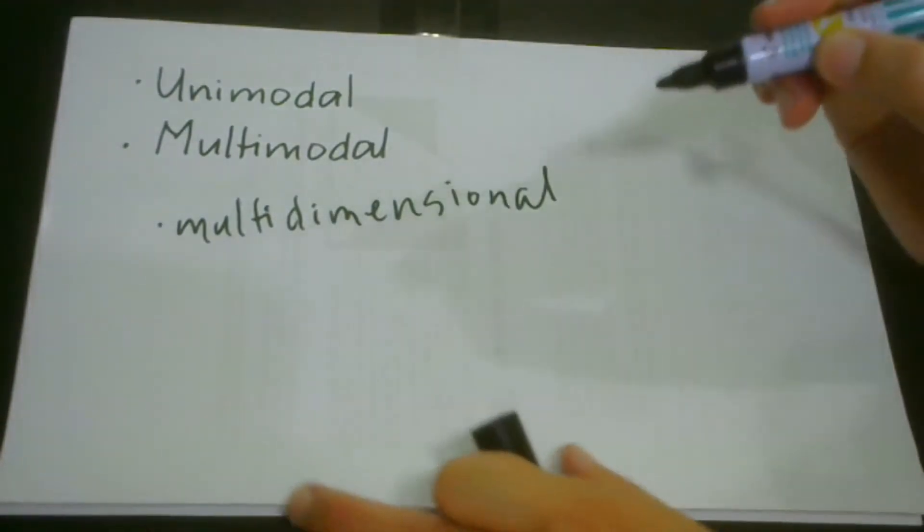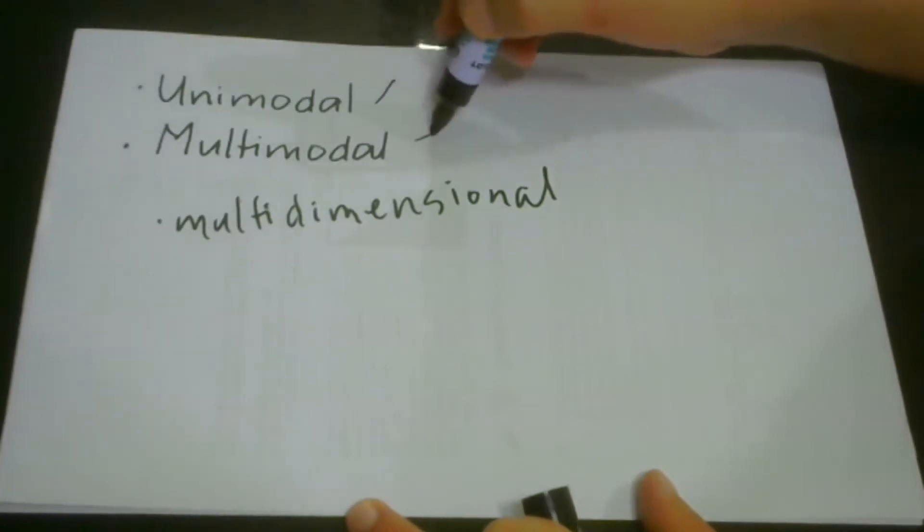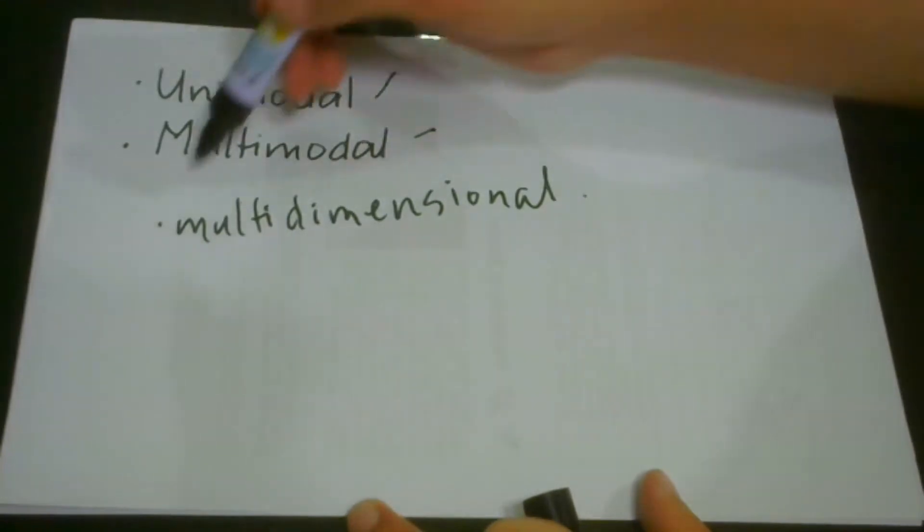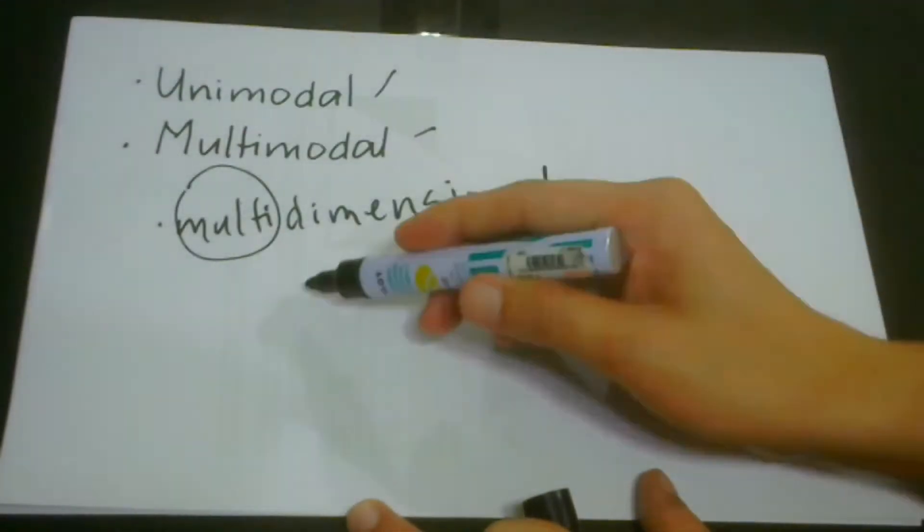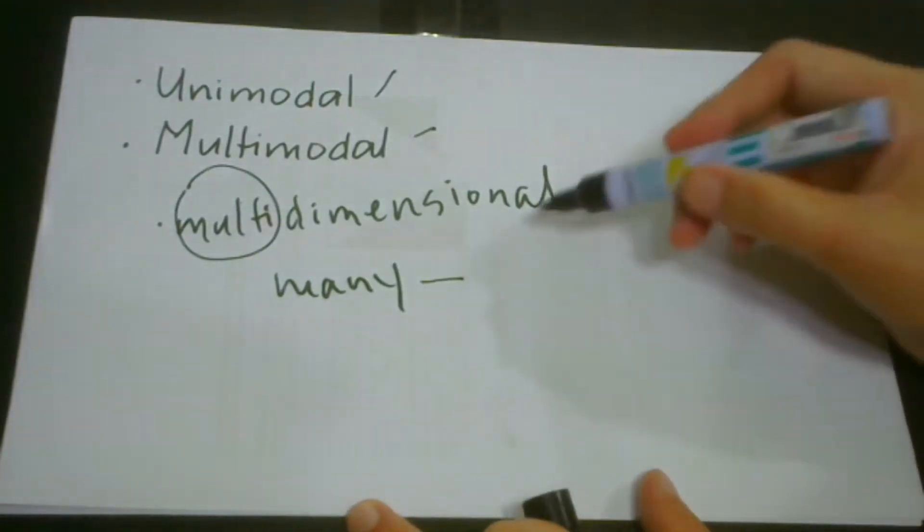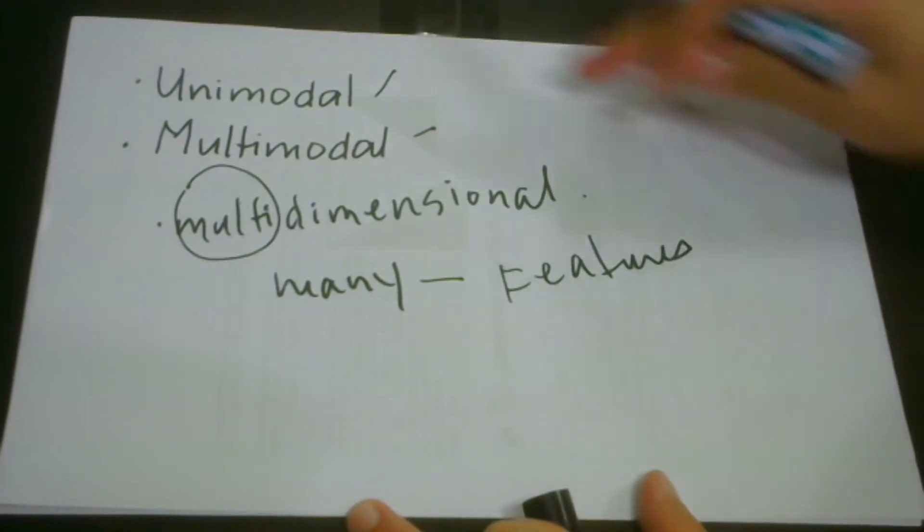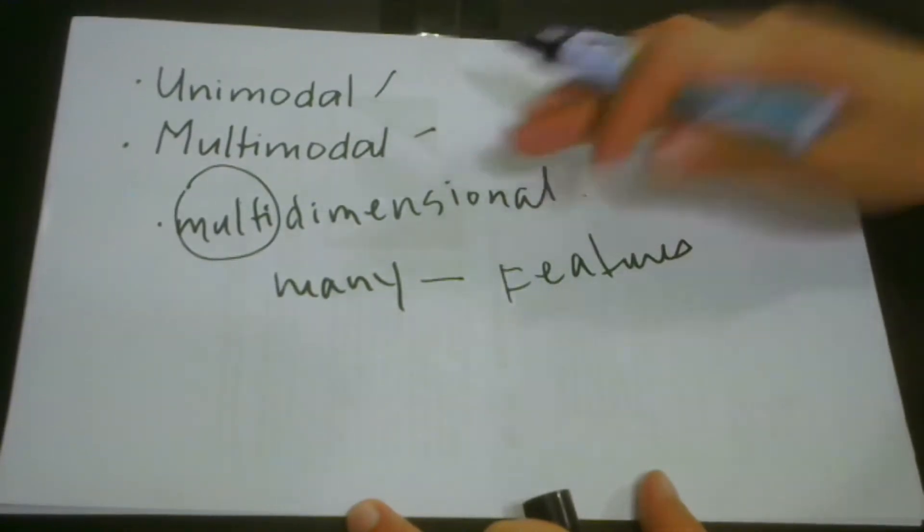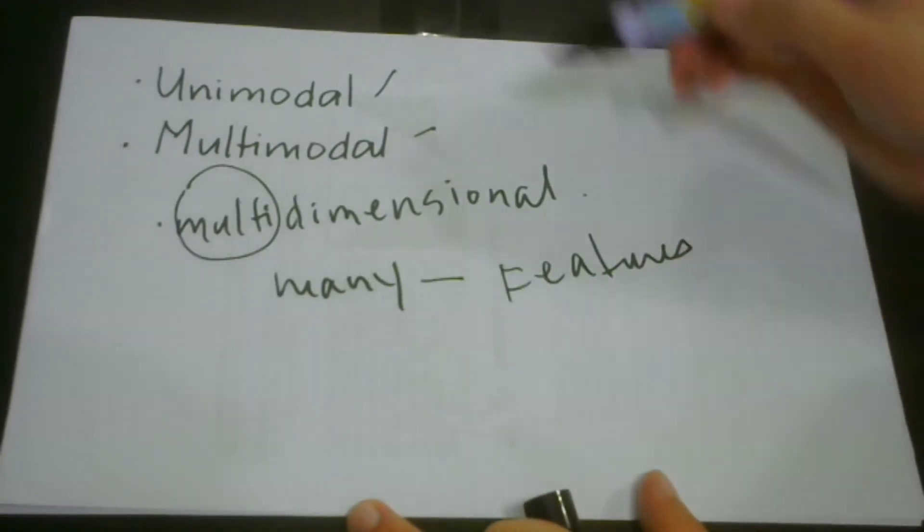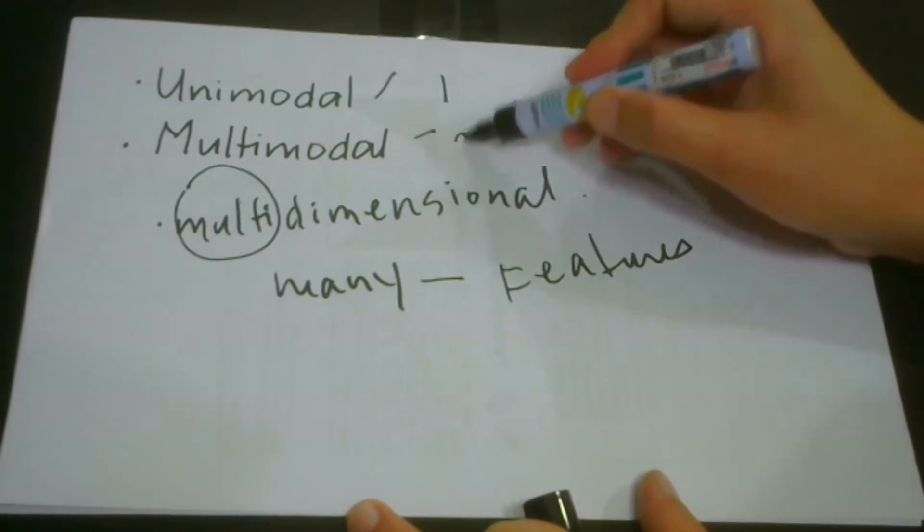The concepts that we have learned in unimodal and multimodal can actually be extended to multi-dimensional data. Just from the word alone, 'multi' means many. In this case, we are talking about a lot of features or dimensions, as opposed to unimodal and multimodal where we just talk about one dimension. But in this case, we have one mode, and here we have two or more modes.